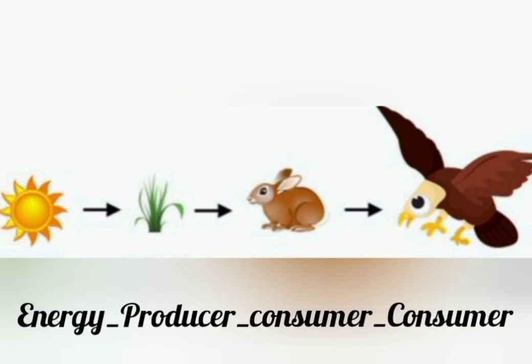Here we can see that the sun is a source of energy. This energy is absorbed by plants, so they are called producers. Animals which eat plants are consumers. Here, the rabbit is a primary consumer, and the rabbit is hunted by an eagle, which is carnivorous and a secondary consumer.